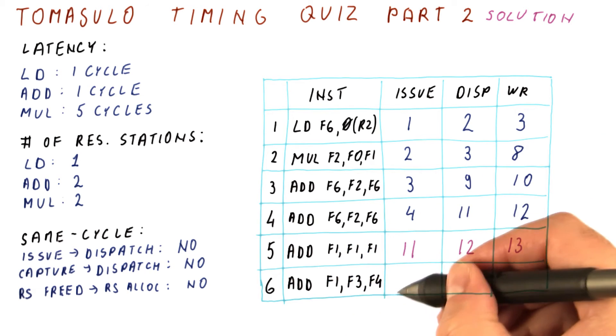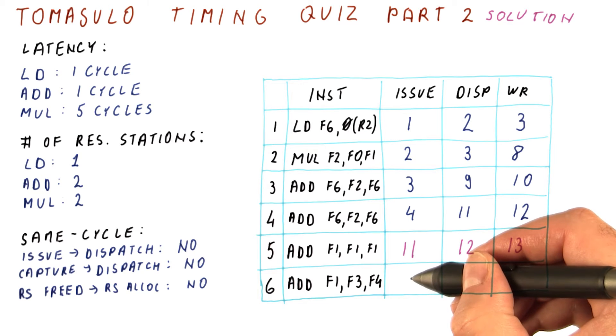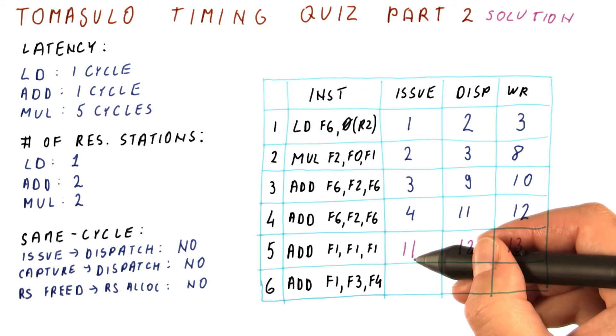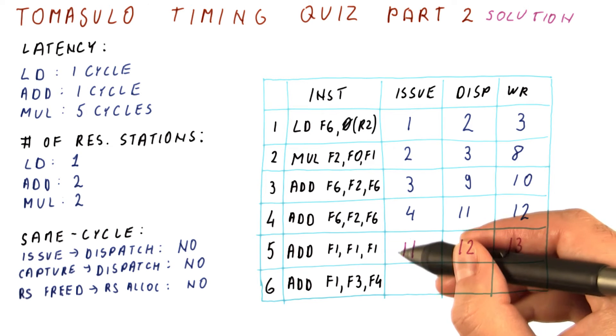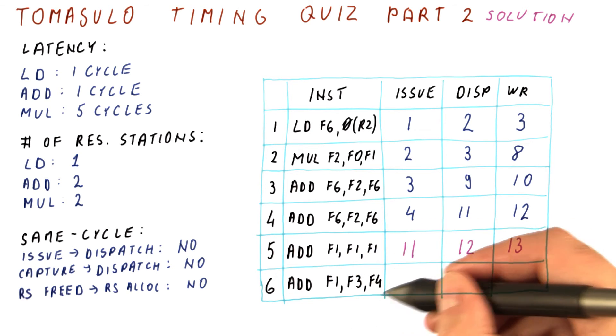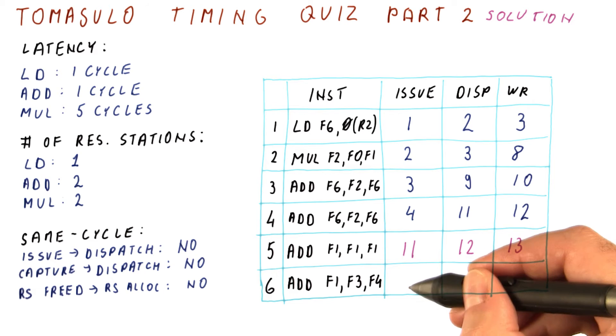The next ADD here will issue in cycle 12 because issue needs to be done in order. So if this one issues in cycle 11, the next ADD in program order will not be considered for issuing until cycle 12. So we will try cycle 12.